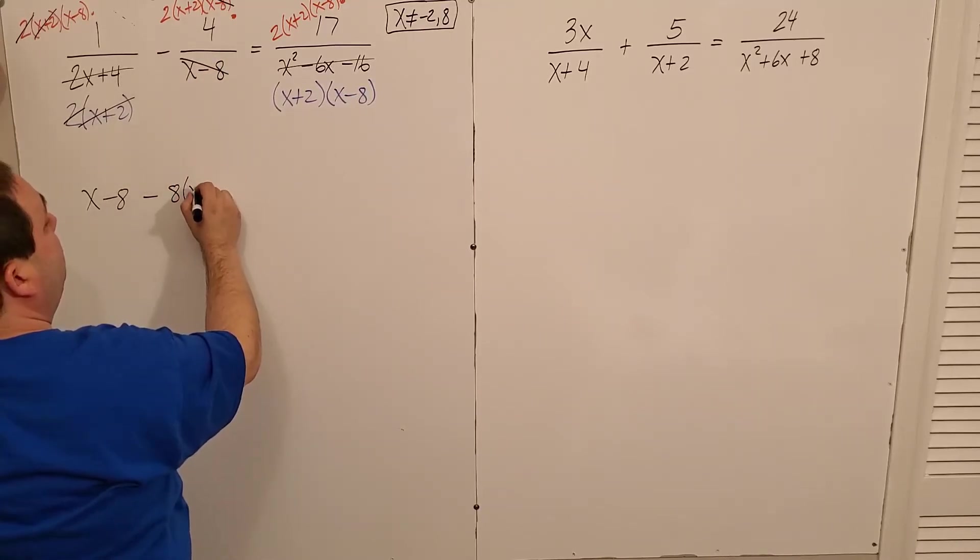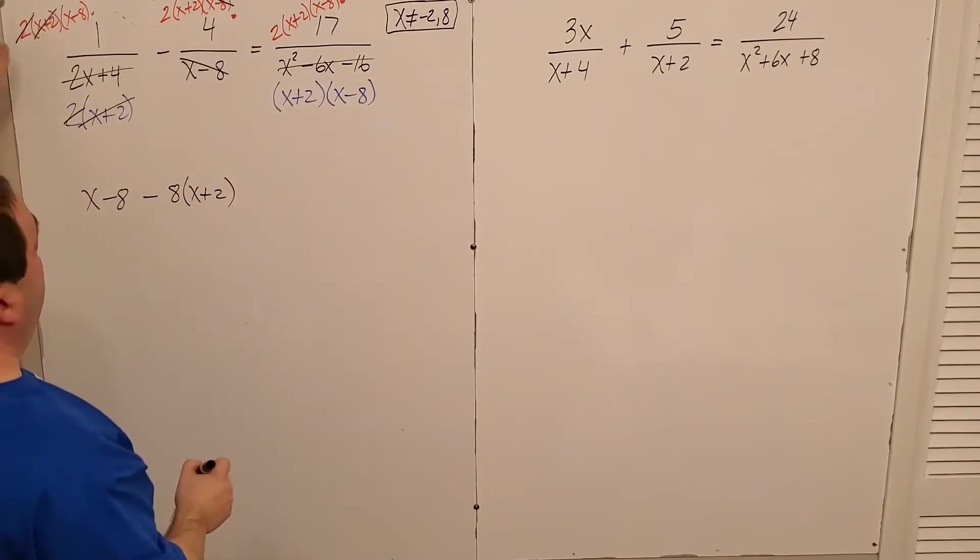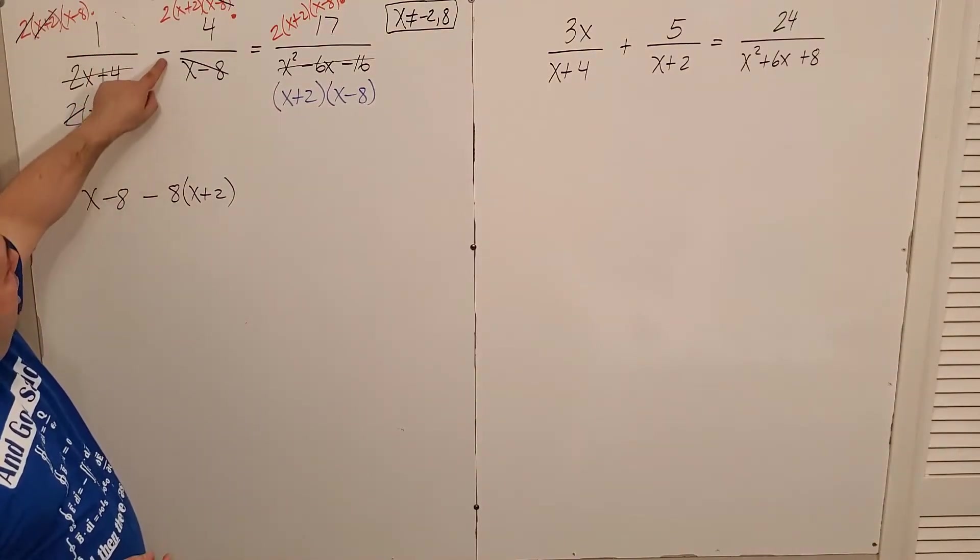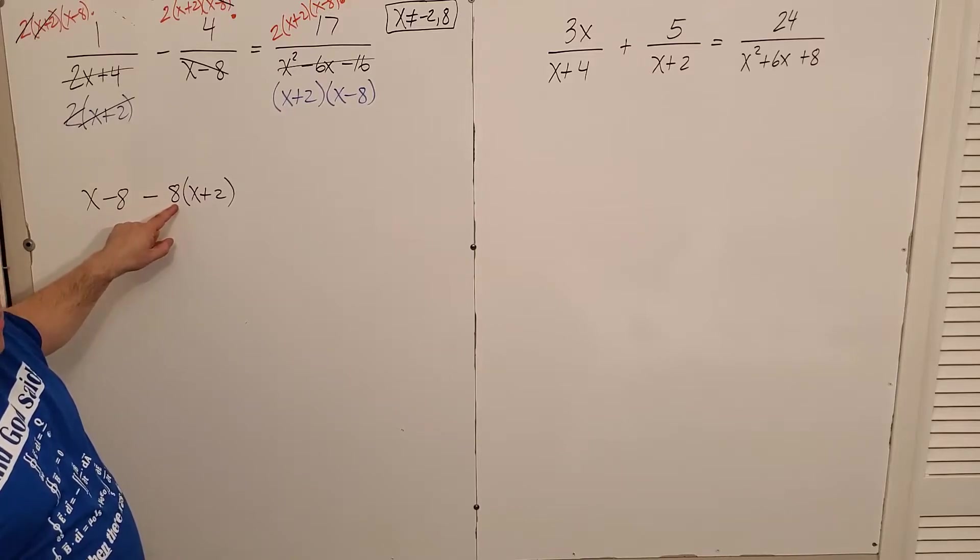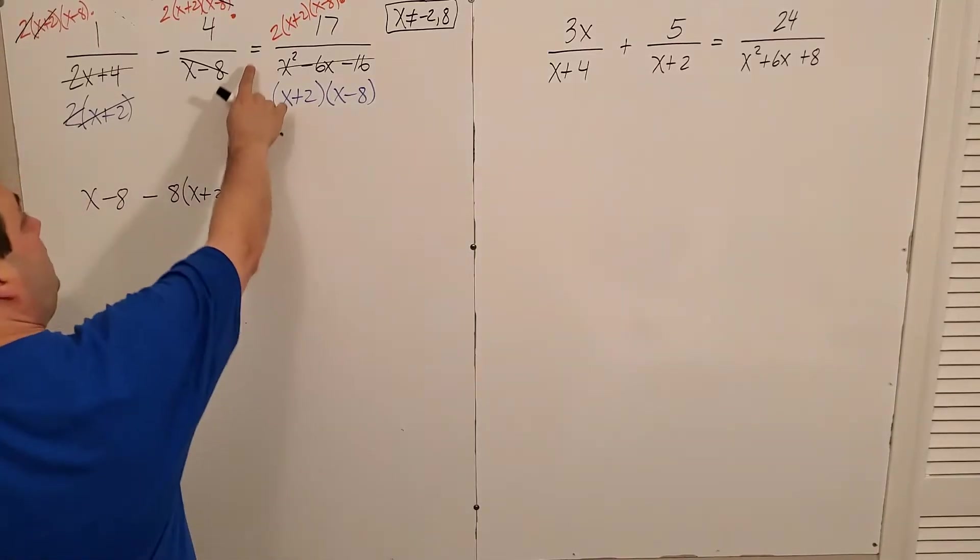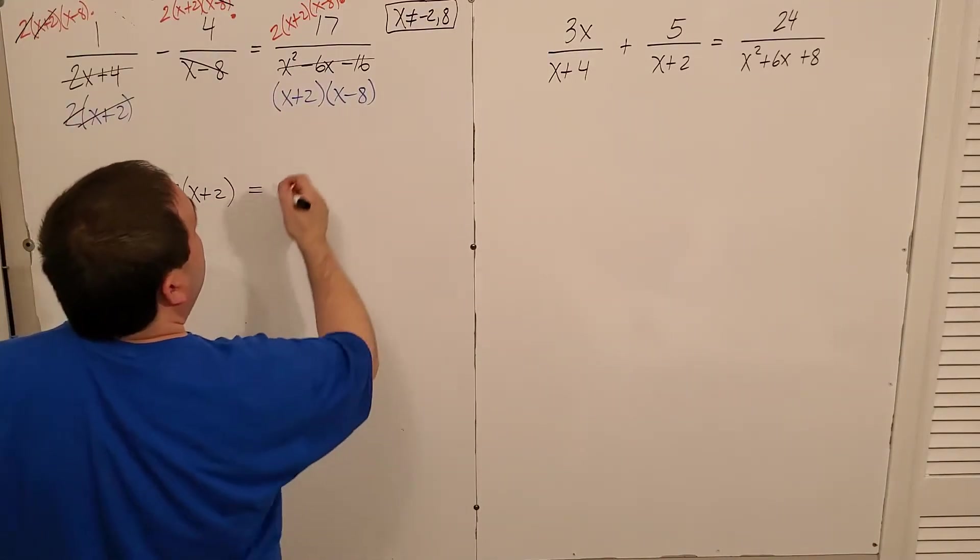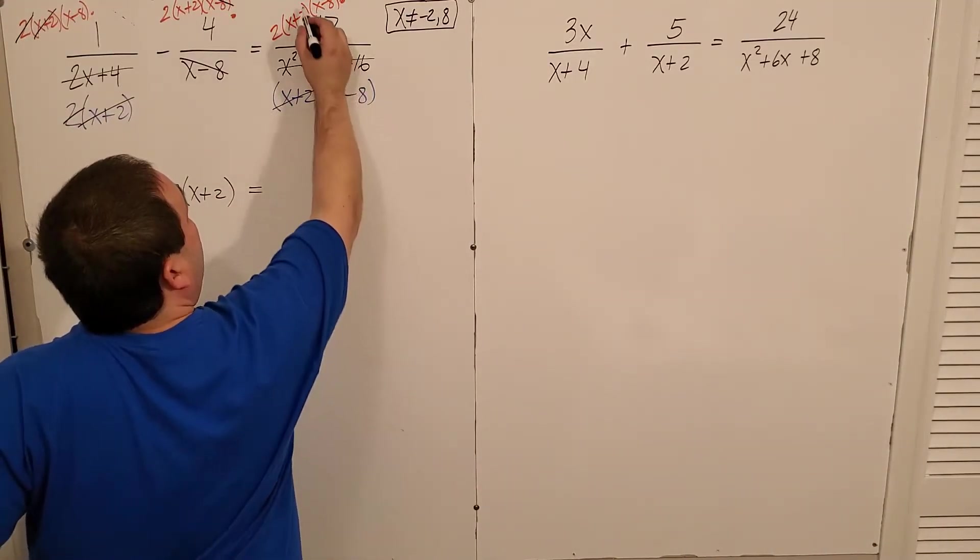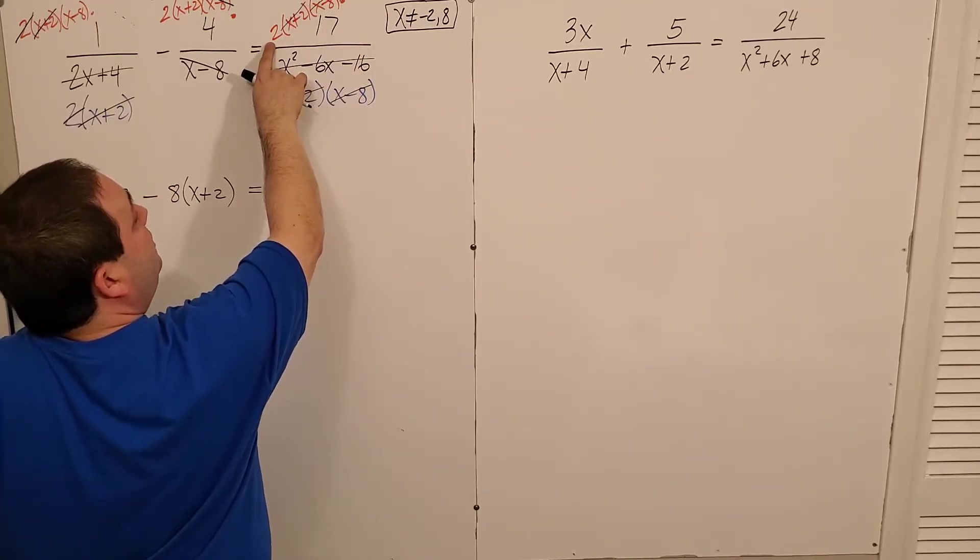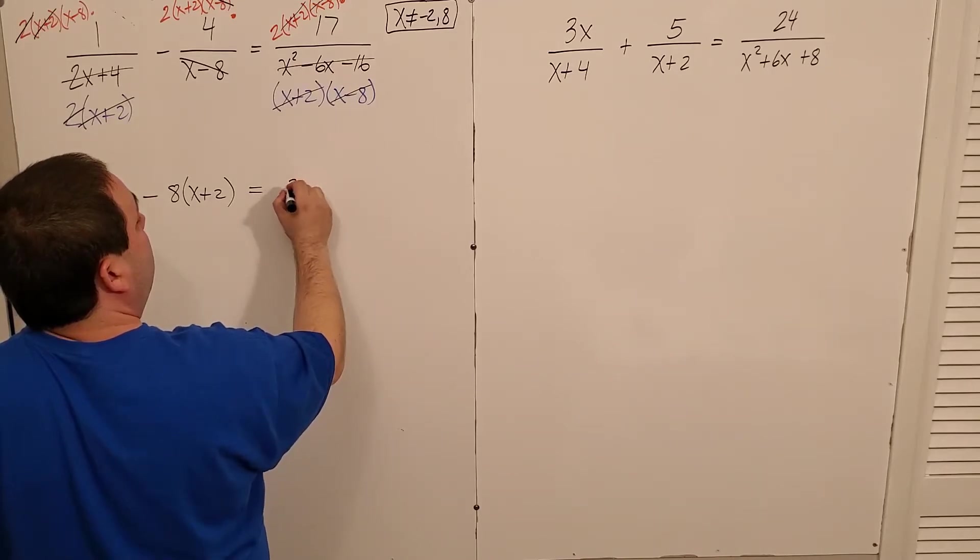Equals. Here the x plus two will go away. And so the x minus eight, that only leaves me with two times 17, 34. So now I have a completely linear equation, right? X to the one, x to the one, no denominators.